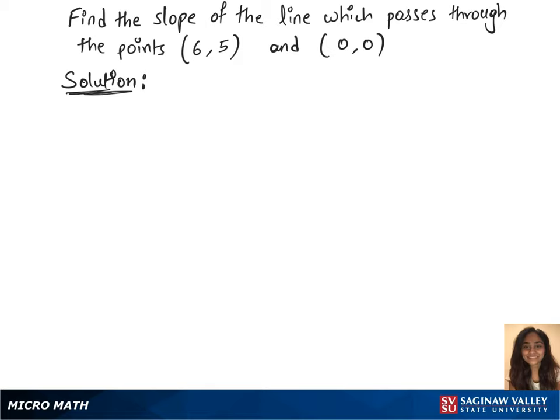To find the slope of the line which passes through the points (6,5) and (0,0), we'll first name the points as x1, y1 and x2, y2.